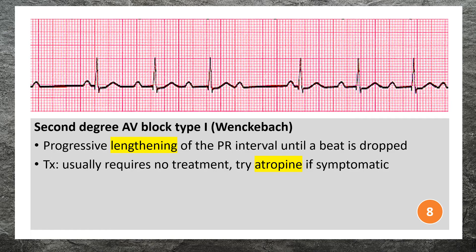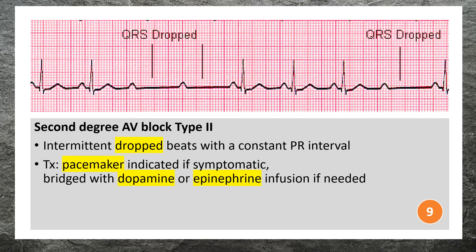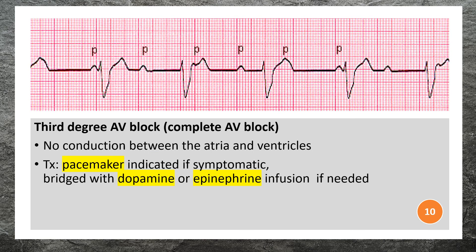Second degree AV block Type 1 usually requires no treatment; atropine may be indicated when symptomatic. Second degree AV block Type 2 is characterized by intermittent dropped beats with a constant PR interval. Symptomatic patients may require a pacemaker, bridged with dopamine or epinephrine infusion.